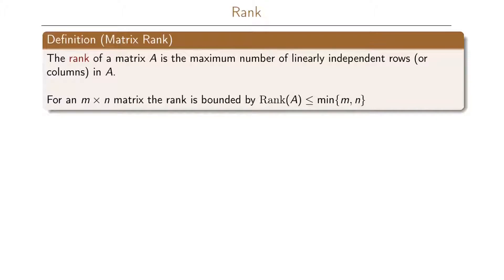The rank of a matrix A is the maximum number of linearly independent rows or columns in the matrix A. For an m by n matrix, the rank is upper bounded by the minimum of the number of rows and the number of columns.